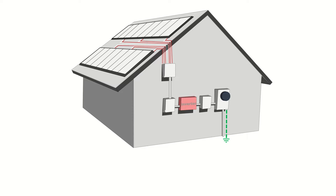After the power goes through the inverter, it comes out as AC power or alternating current. AC disconnects are typically placed between the inverter and the main service panel in order to separate the inverter from the electrical grid. These can be a standalone switch or a breaker on a service panel, but are typically mounted to the wall between the inverter and the utility meter.